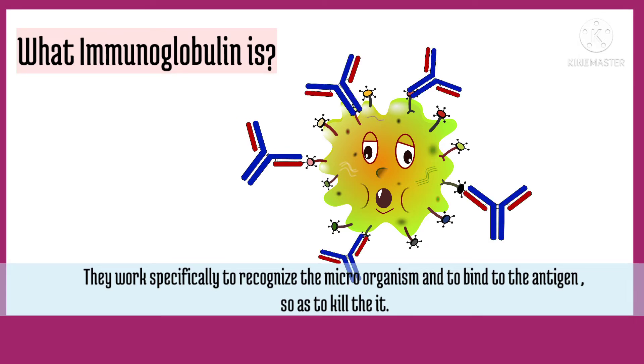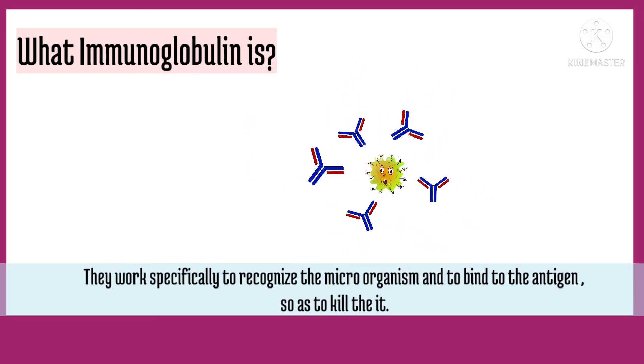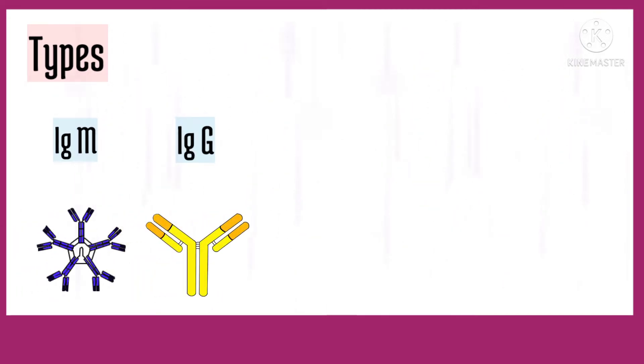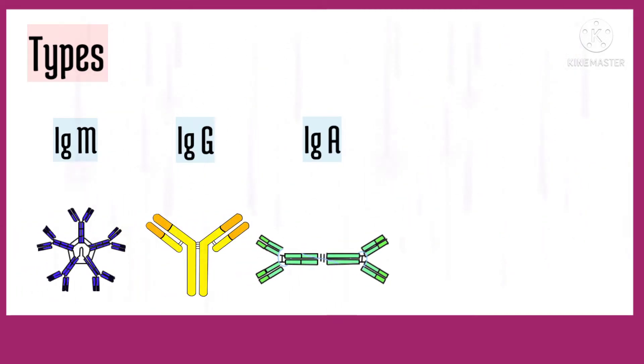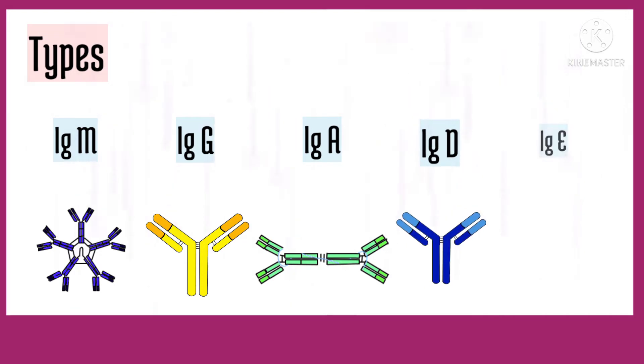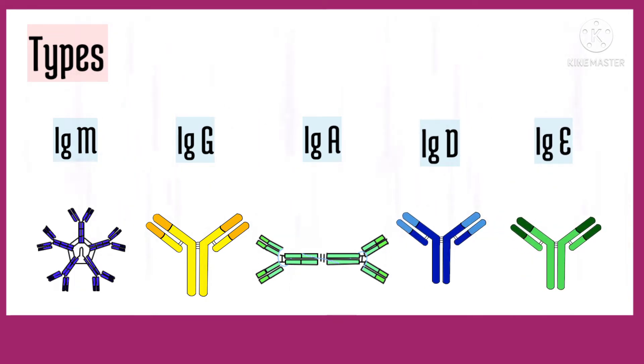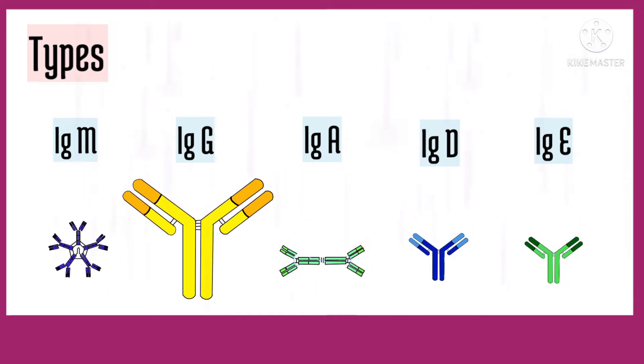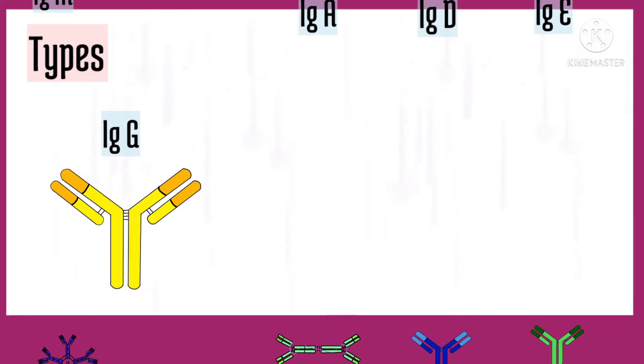Antibodies or immunoglobulins work to specifically recognize the microorganism and bind to the antigen of the bacteria and virus so as to kill it. There are five major types of immunoglobulins: IgM, IgG, IgA, IgD, and IgE, which vary in structure and slightly in their function. Since we are dealing only with IgG4 related disease, let's skip the other immunoglobulins for now.